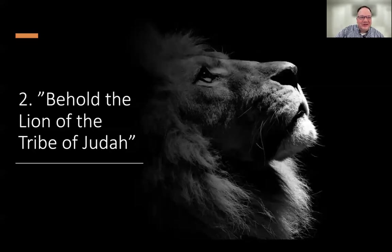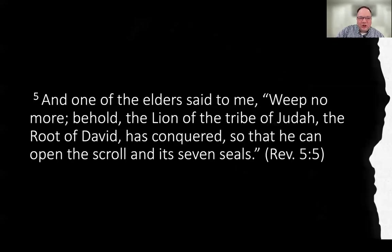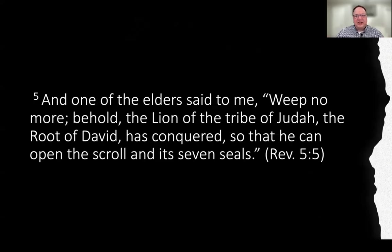Then we get the great news. An elder said to John, 'Weep no more. Behold, the lion of the tribe of Judah, the root of David has conquered so that he can open the scroll and its seven seals.' The worthy one was present all along — it just had not yet been disclosed who that is. So John weeps as the exploration finds no one worthy, and then the worthy one is about to be revealed.